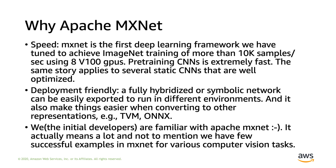Second, in terms of deployment, MXNet is deployment-friendly. A fully hybridized or symbolic network can be easily exported to run in different environments, and it also makes things easier when converting to other IRs, for example TVM or ONNX. The only alternative we were familiar with in 2018 was TensorFlow, which is similar in handling static representations. However, at that time, Gluon's interface was a plus when there is a good trade-off between dynamic coding experience and static representation.